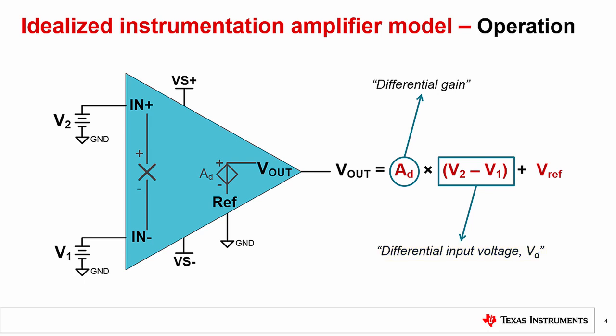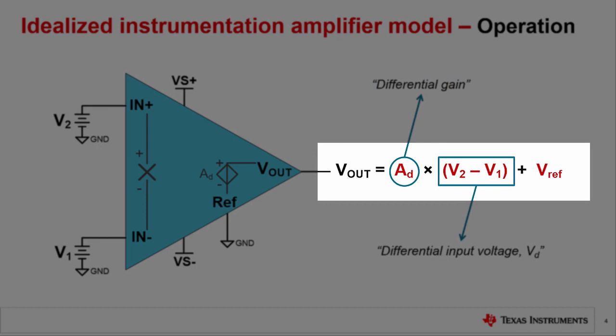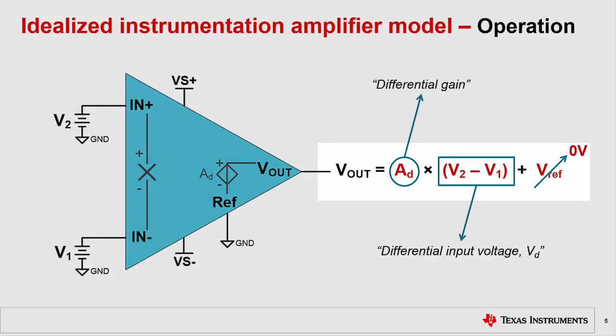The gain of the circuit, or differential gain AD, may be set externally or is sometimes internally fixed to the IA. The instrumentation amplifier output will be equal to the product of the differential gain and the differential input voltage plus the reference voltage. Remember that we are going to set this reference voltage to zero volts for the remainder of the video.